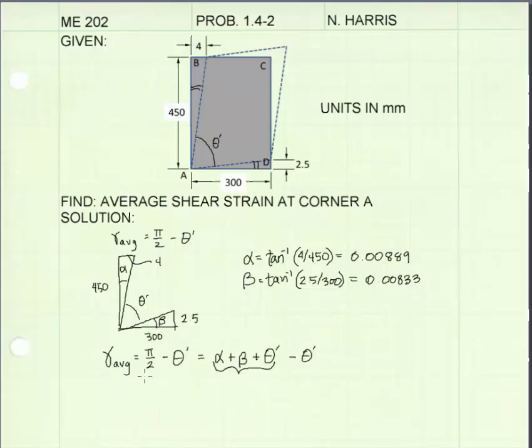Now I've rewritten my equation for average shear strain. That's equal to pi halves minus theta prime. Now we see that these three angles, alpha plus theta prime plus beta, all sum to pi halves. So I have replaced pi halves with alpha plus beta plus theta prime. We see that the theta primes cancel out. So our average shear strain is equal to alpha plus beta.